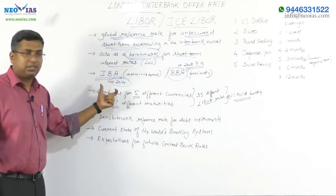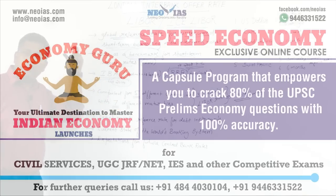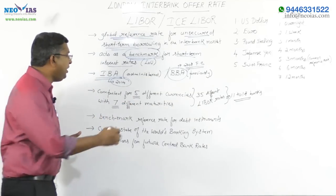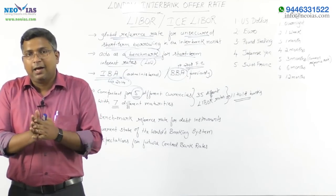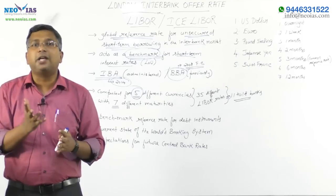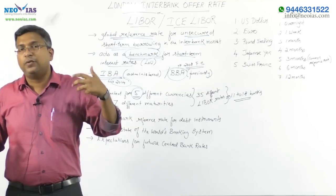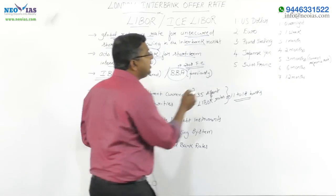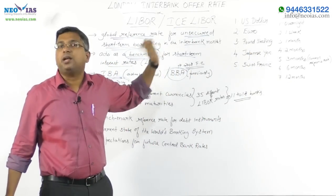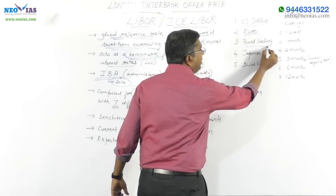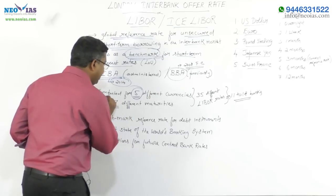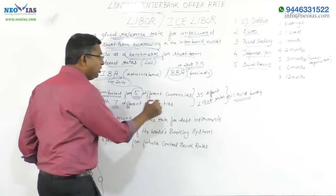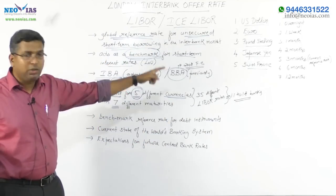The Intercontinental Exchange Benchmark Administration computes LIBOR based on 5 different currencies. The 5 currencies are: US dollar (the most important globally accepted hard currency), euro, pound sterling, Japanese yen, and Swiss franc. It is important to note that the Chinese yuan is not included, even though it has been added to the IMF's Special Drawing Rights (SDR). LIBOR is computed for those 5 major developed-country currencies, with Swiss franc being the notable 5th one.